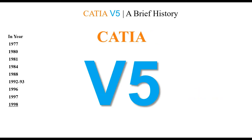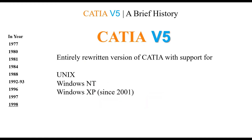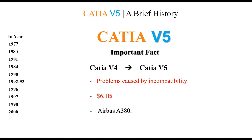Finally, in 1998 CATIA V5 was released — an entirely rewritten version of CATIA with support for UNIX, Windows NT, and Windows XP later on. One important fact: in the years prior to 2000, problems caused by incompatibility between CATIA V4 and V5 led to 6.1 billion in additional costs due to years of project delays in production of the Airbus A380. The problem was that aircraft wiring was too short to make a connection, possibly due to differences in geometric kernels between both versions or by modeling methods employed by end users.